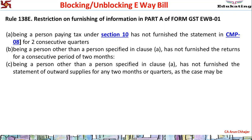Three categories are covered. The first is a registered person under Section 10 - that is, a composition dealer - who has not furnished their statement in CMP-08 for two consecutive quarters. Composition dealers are not required to file any return during the year; only after completion of the year they file GSTR-4 and annual return GSTR-9A. So if a composition levy dealer has not deposited tax via CMP-08 for two consecutive quarters, they get blocked.